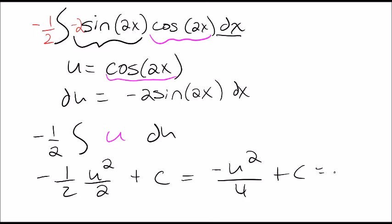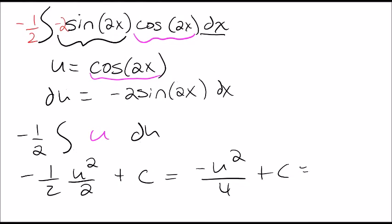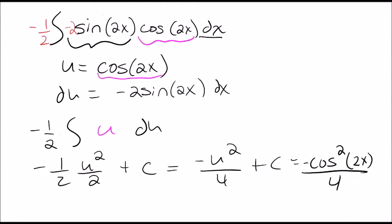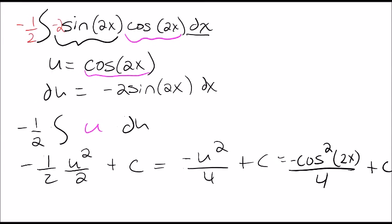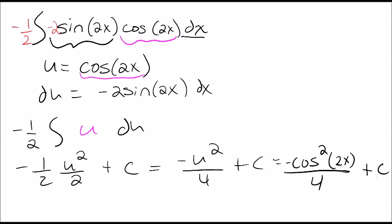Then we substitute back in for u, which is cosine 2x. So we get negative cosine squared 2x over 4 plus c. That's the same answer as the last video I posted.